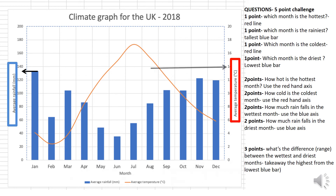For temperature, do the same but go to the middle of the bar and see where the line is. Draw a line across to the red axis where it says average temperature in degrees Celsius. In this example the line is in between 14 and 16, so the average temperature in August is 15 degrees.